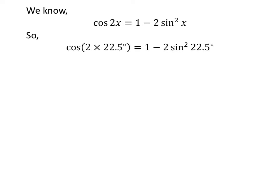Let us plug 22.5 degrees in place of x in the above identity. So, cosine of 2 times 22.5 degrees is equal to 1 minus 2 times the square of sine of 22.5 degrees. Since 2 times 22.5 degrees is equal to 45 degrees, cosine of 45 degrees is equal to 1 minus 2 times the square of sine of 22.5 degrees.